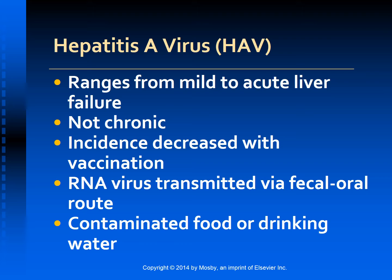Hepatitis A virus can cause a mild flu-like illness or an acute hepatitis with jaundice. It can also cause acute liver failure. It does not result in a chronic long-term infection. In the United States, the incidence of hepatitis A viral infection has declined since vaccination was recommended for at-risk persons and children at the age of one.